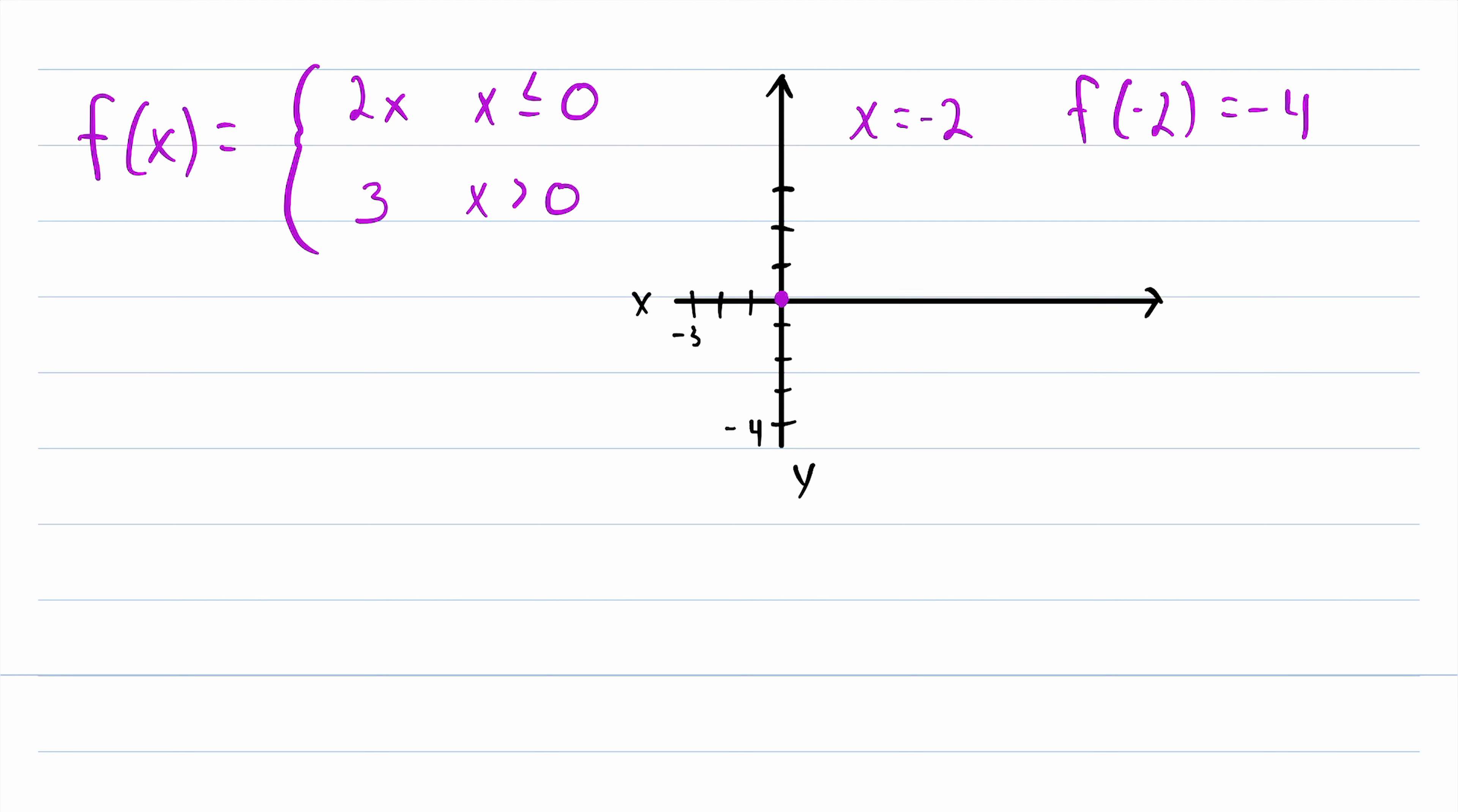So we'll graph that point, negative 2, negative 4. That's right about here. Now I've covered up the negative sign on the 4, so let me just draw that on the other side, negative 4. So when x is less than or equal to 0, our function looks something like that. So that's one piece of the function.